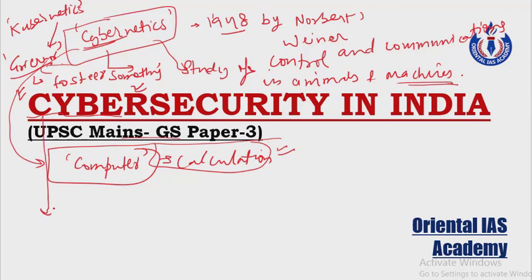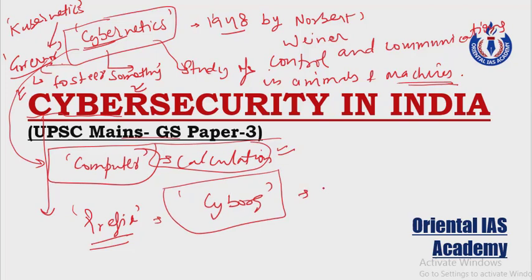Today, 'cyber' is used as a prefix. For example, 'Cyborg' — there is a famous movie about a cyborg called Alita: Battle Angel; it is a very good movie. In 'cyborg,' 'cy' stands for cyber, and 'org' refers to organic. It means a combination of an organic body and cybernetics — using artificial intelligence to create a half-human, half-robotic body. All these things fall under cybernetics.